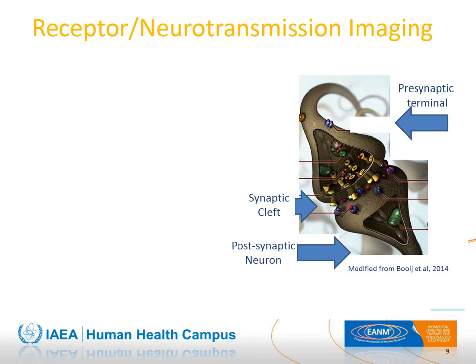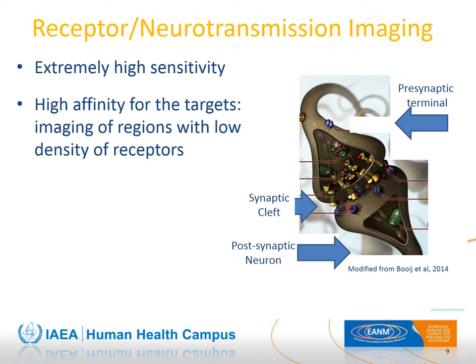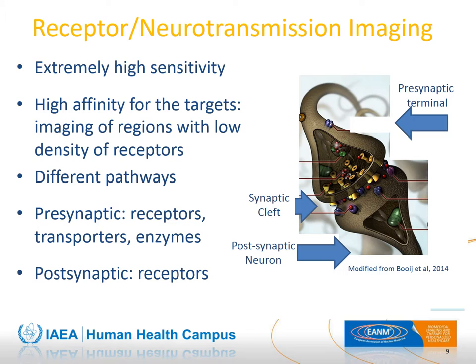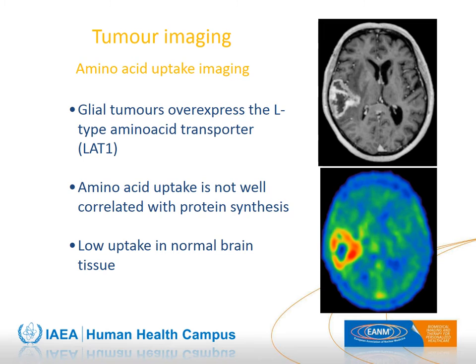Receptor neurotransmission imaging is possible by means of SPECT and PET thanks to their extremely high sensitivity. High affinity for targets allows imaging of regions with low receptor density. Different pathways can be investigated on both the presynaptic and postsynaptic sides, including receptor transporters and enzyme imaging. By evaluating amino acid uptake, brain tumors can be investigated, as glial tumors overexpress L-type amino acid transporters, while low uptake is present in normal brain tissue.